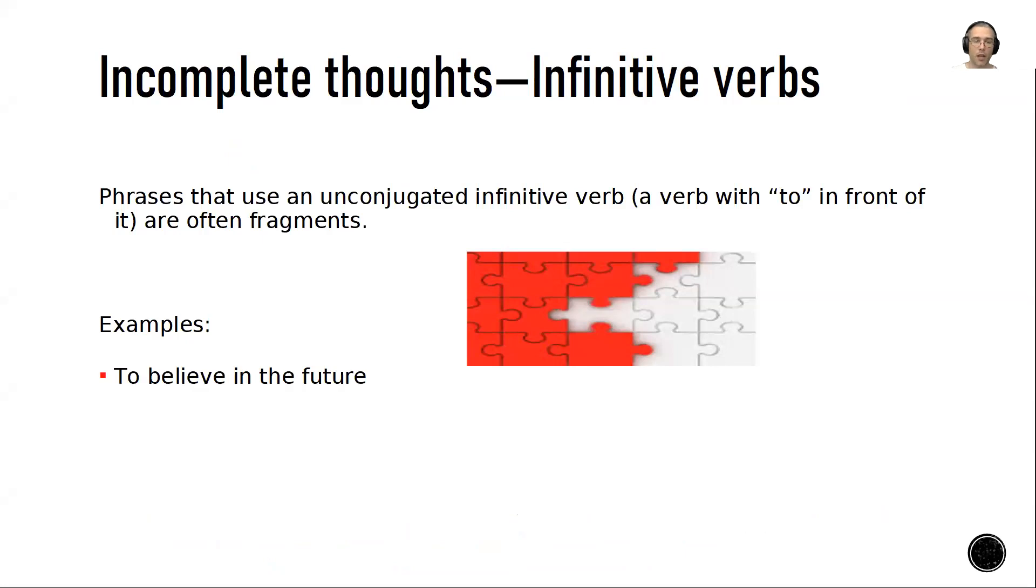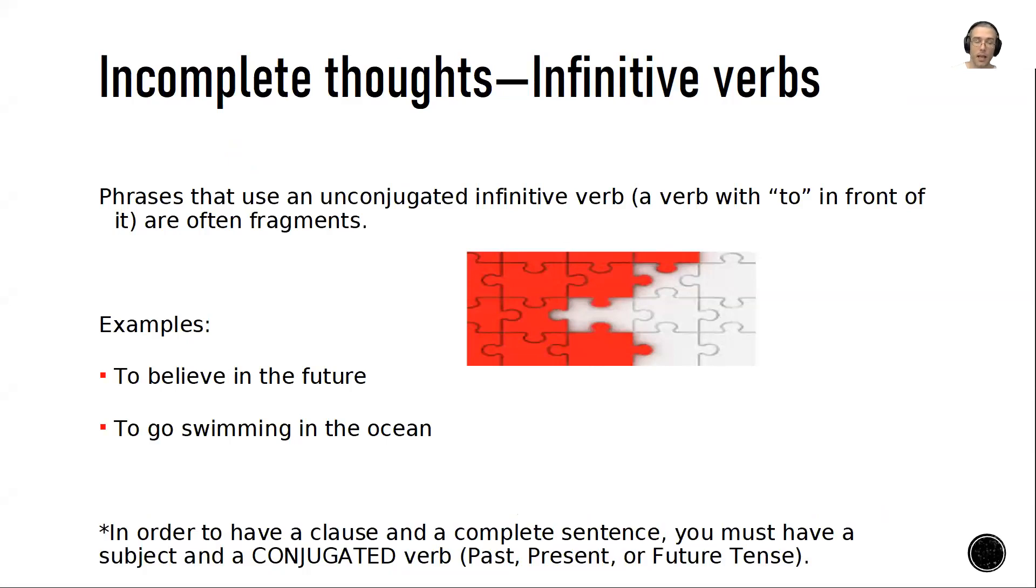As examples: 'To believe in the future,' 'To go swimming in the ocean.' In order to have a conjugated and complete sentence, you must have a subject and a conjugated verb: past, present, or future tense.